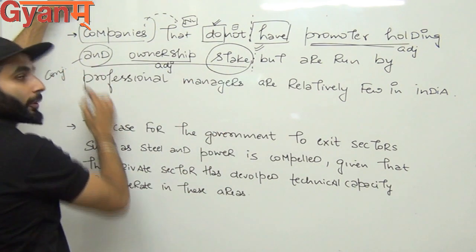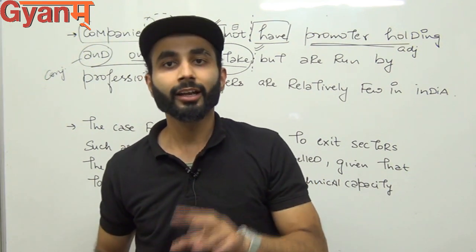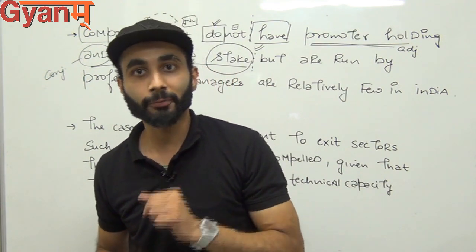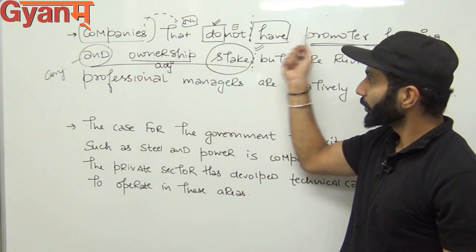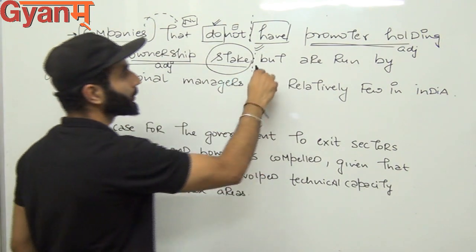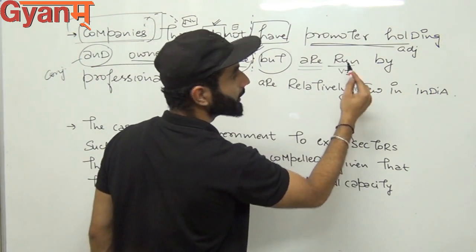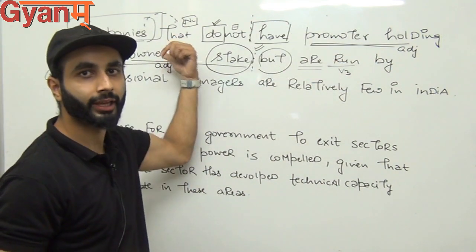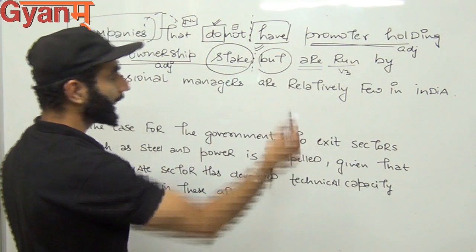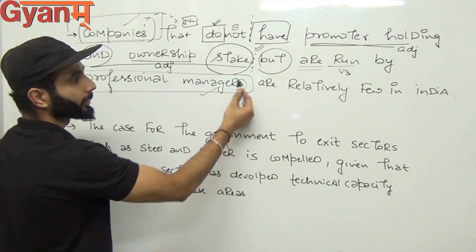If I say 'Ram and Sham are playing,' that means Ram is playing and Sham is playing separately. So when a conjunction joins two things, they were separate before. Proof: companies that do not have promoter holding stake — correct. Companies that do not have ownership stake — also correct. Now, 'are run' — passive voice. Company ne kisiko run nahi kiya, company khud run hui hai. Companies is plural, managers is plural — 'are run by professional managers' is correct. Then 'relatively few in India' — 'few' is an adjective.